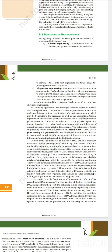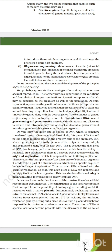Sexual reproduction provides opportunity for variation and unique genetic combinations, while asexual reproduction preserves genetic information. Traditional hybridization in plant and animal breeding very often leads to inclusion of undesirable genes along with desired ones. Genetic engineering — using recombinant DNA, gene cloning, and gene transfer — overcomes this limitation, allowing us to isolate and introduce only one or a set of desirable genes without introducing undesirable genes into the target organism.